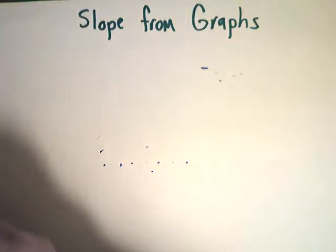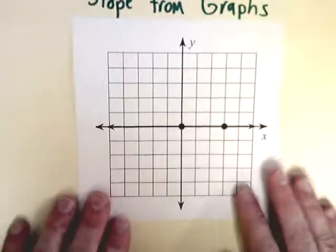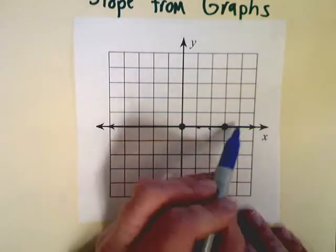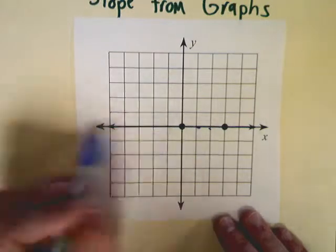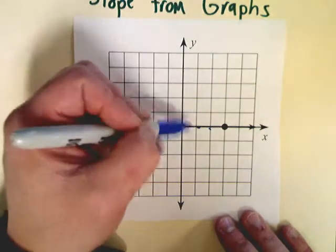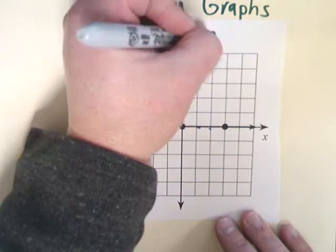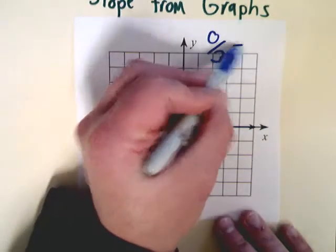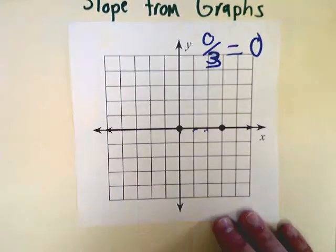The next type, you can barely even see it. This one, I'm going from here to here. So, as you can see, it's just a flat change. So, my change in x would be, or my change in my y values would be 0. My change in x would be 1, 2, 3. And, 0 divided by 3 is, of course, 0. So, I have a slope of 0. If you have a flat line, it's 0.